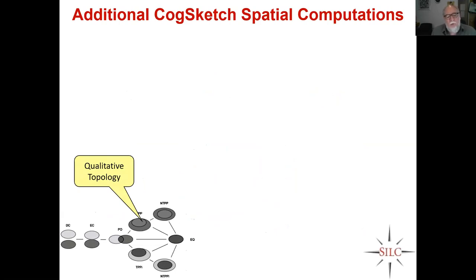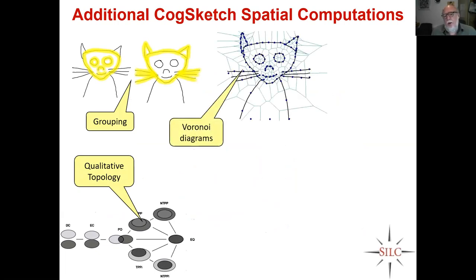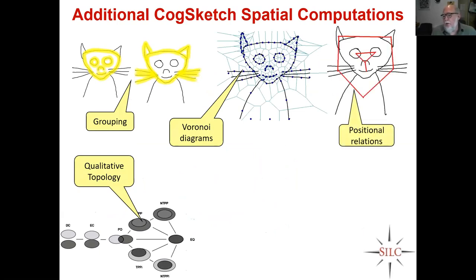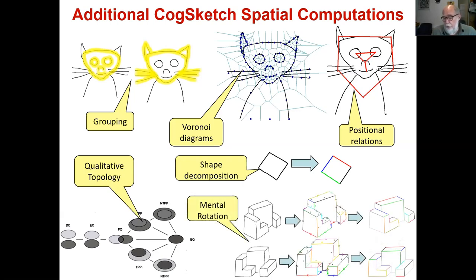CogSketch also does qualitative topology — do things overlap, or is one thing inside the other? These get used a lot in geoscience. There are groupings for things inside something else, or things touching around the edge. Voronoi diagrams measure adjacency — so if you're representing the relative positions of parts of a cat, you would say one eye is to the left of the other and they're both above the nose, but you wouldn't particularly relate one eye to one whisker because they're not adjacent. There's also shape composition — carving something into edges, used for example to model mental rotation using representations for edges labeled in terms of concave, convex, and other representations. So it's doing quite a lot of visual processing under the hood, far beyond anything in a recognition-based system.